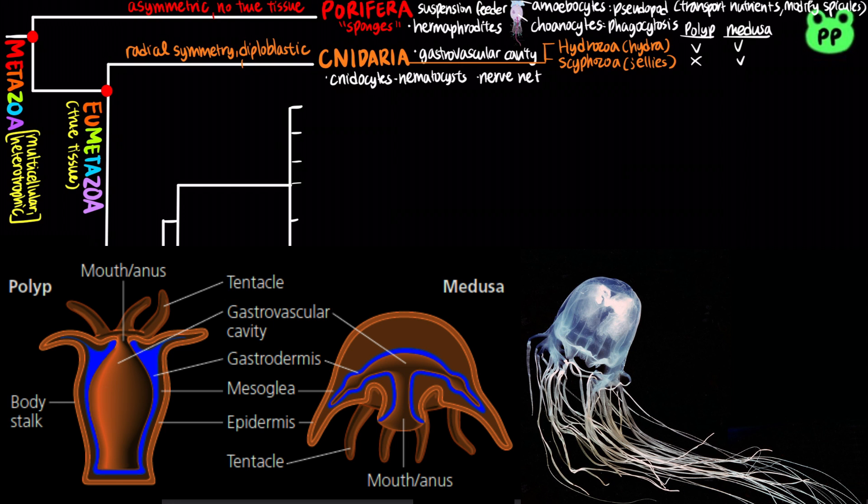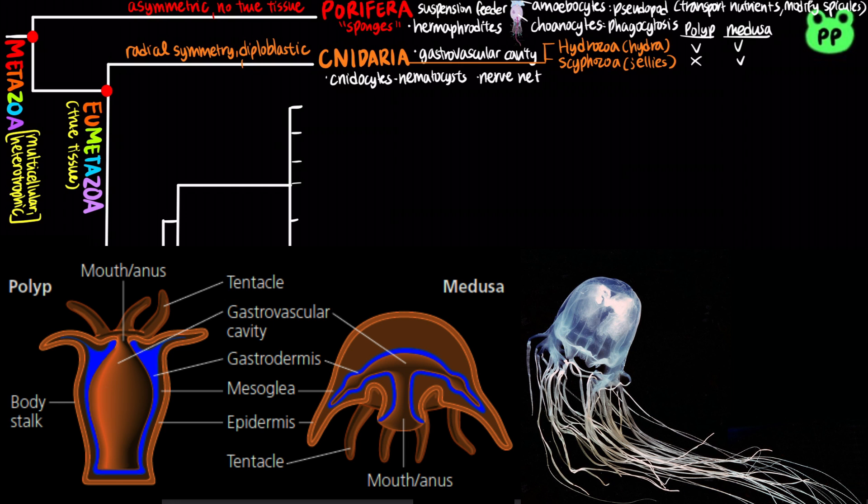The class Cubozoa includes box jellies and sea wasps. They are also marine animals with medusa body shapes and produce especially potent venom.